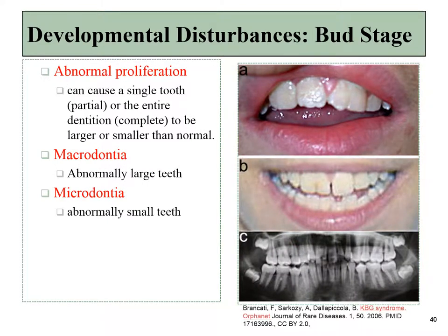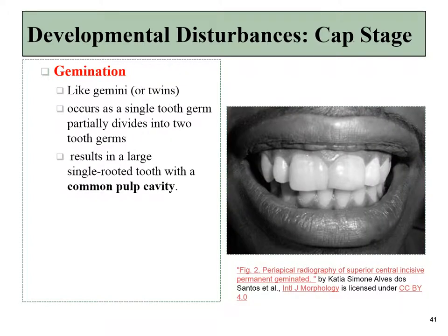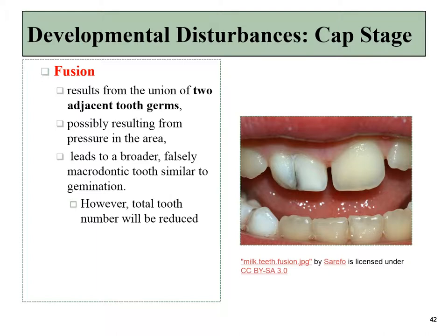Sometimes rather than extra teeth, teeth may grow abnormally large or small. Abnormally large teeth are macrodontia; microdontia are abnormally small, both leading to crowding or extra spacing. One form of macrodontia is gemination — like the zodiac sign Gemini — where a single tooth germ splits and forms twins that, if not far enough apart, grow into one abnormally large tooth. Fusion, by contrast, occurs when initiation happens too close together and two tooth germs start growing near one another and fuse into a single tooth.